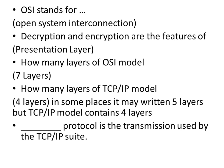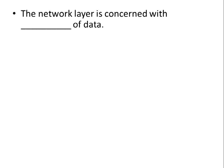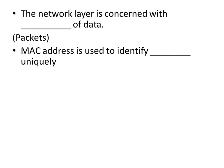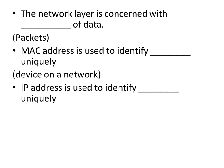ARP is the protocol used by the TCP/IP suite. The network layer is concerned with packets of data. MAC address is used to identify devices on the network uniquely. IP address is used to identify a network uniquely.